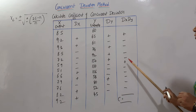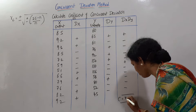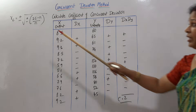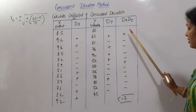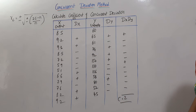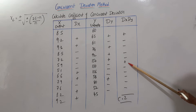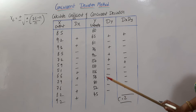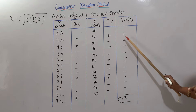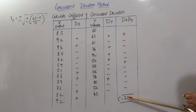Now count the plus values in the dx×dy column. We have only 2 plus signs — at positions 1 and 2. So C equals 2. C is simply the count of positive values in the dx×dy column. If there were 3 positives, C would be 3. Here we have only 2, so C is 2.